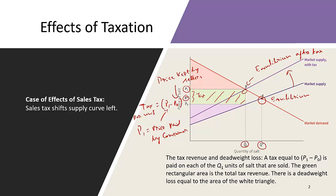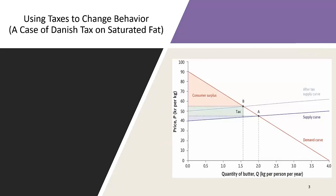There is a deadweight loss associated with taxation — a triangle representing that deadweight loss. Because of taxation, some people can no longer afford the product, and sellers are only willing to keep P0 rather than P1, so they are not willing to sell as much. These are the market distorting effects of taxation.